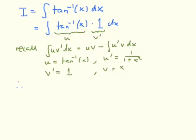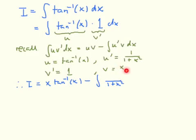If u is the arctangent of x, then u' is its derivative, which is 1 over 1 plus x squared. Similarly, v' is 1 and v is the integral of 1, which is simply x. Now we have all the tools and can substitute into the formula. Our integral is u times v — written as x times the inverse tangent of x — minus the integral of u'·v, which is x over 1 plus x squared, integrated with respect to x.